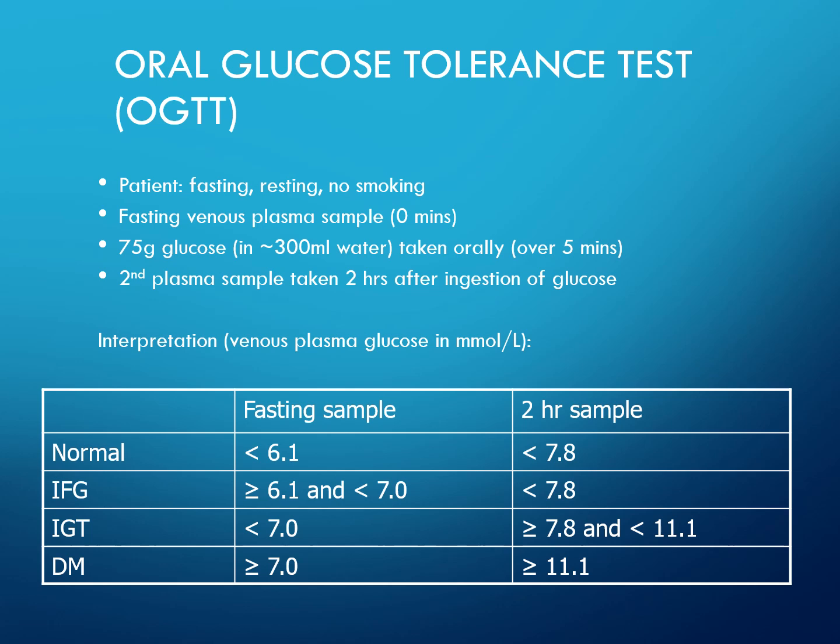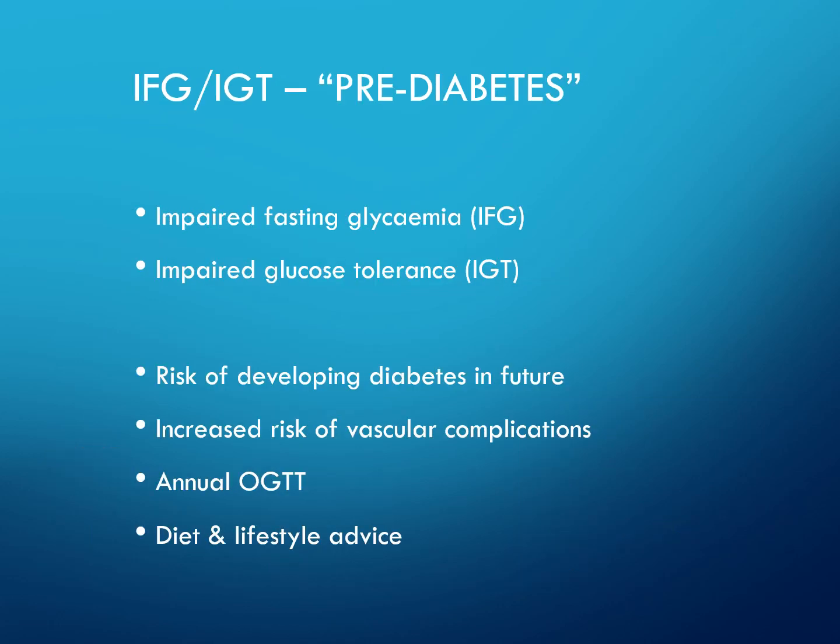In the table, normal values are a fasting glucose less than 6.1 and a 2-hour glucose less than 7.8. For diabetes mellitus, it is greater than or equal to 7.0 fasting, or greater than or equal to 11.1 at 2 hours. IFG and IGT — impaired fasting glycaemia and impaired glucose tolerance — represent pre-diabetes, indicating people at risk of developing diabetes in the future and at increased risk of vascular complications. They undergo annual oral glucose tolerance testing and receive diet and lifestyle advice.